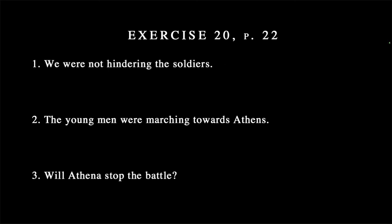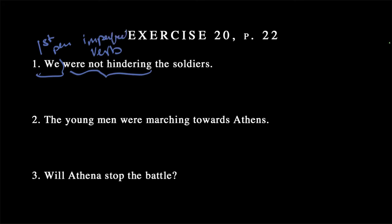"We were not hindering the soldiers" is what we're doing. Let's pause and break this sentence up. "We" is going to tell us about our subject — it's first person plural. "Were not hindering" is going to be our verb. It's going to be past tense and progressive in aspect, so it's imperfect. "The soldiers" is the direct object. This is the English subject-verb-object order.